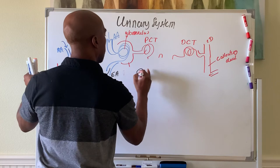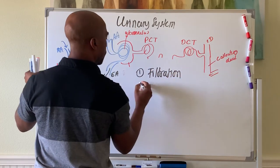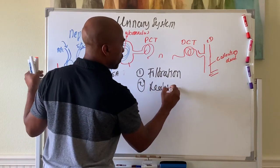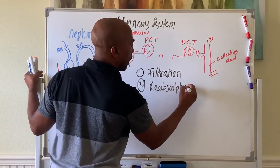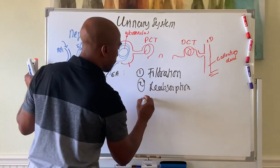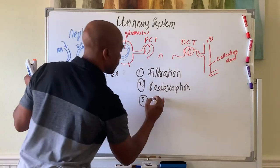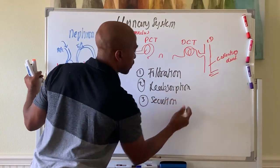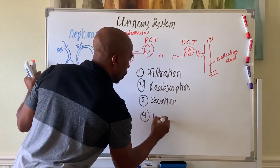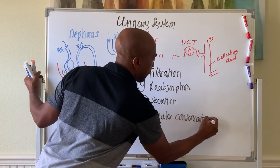One is filtration. We'll discuss that shortly. Filtration. Two is your reabsorption, which is moving stuff back from the filtrate back into the blood. Step three is your secretion, moving stuff back into the filtrate. And step four, we call it water conservation.